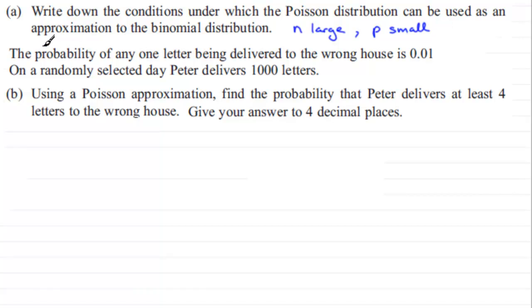Now for the next part, we're told that the probability of any one letter being delivered to the wrong house is 0.01. And on a randomly selected day, Peter delivers a thousand letters. In part B we've got to use the Poisson approximation to find the probability that Peter delivers at least four letters to the wrong house. Give your answer to four decimal places.